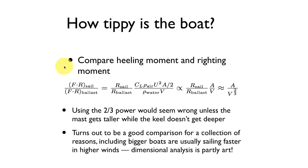This dimensionless group turns out to be a really good comparator for a whole collection of different boats, for a whole collection of different reasons. Applying dimensional analysis is partly a science approach, but it's also very much an art approach in terms of making these approximations to find a dimensionless group that actually captures the information we're looking for.